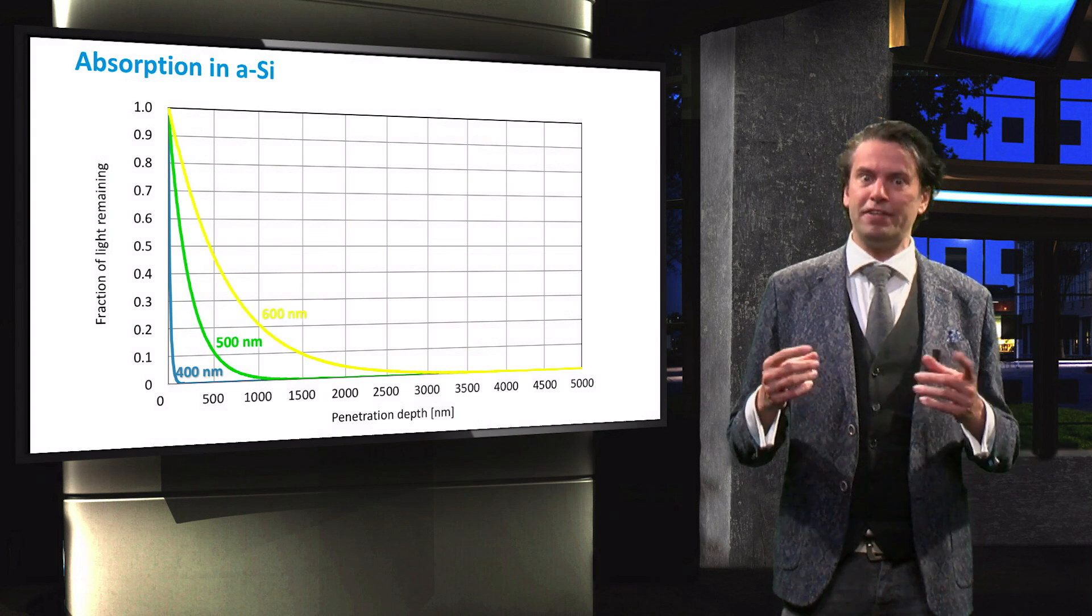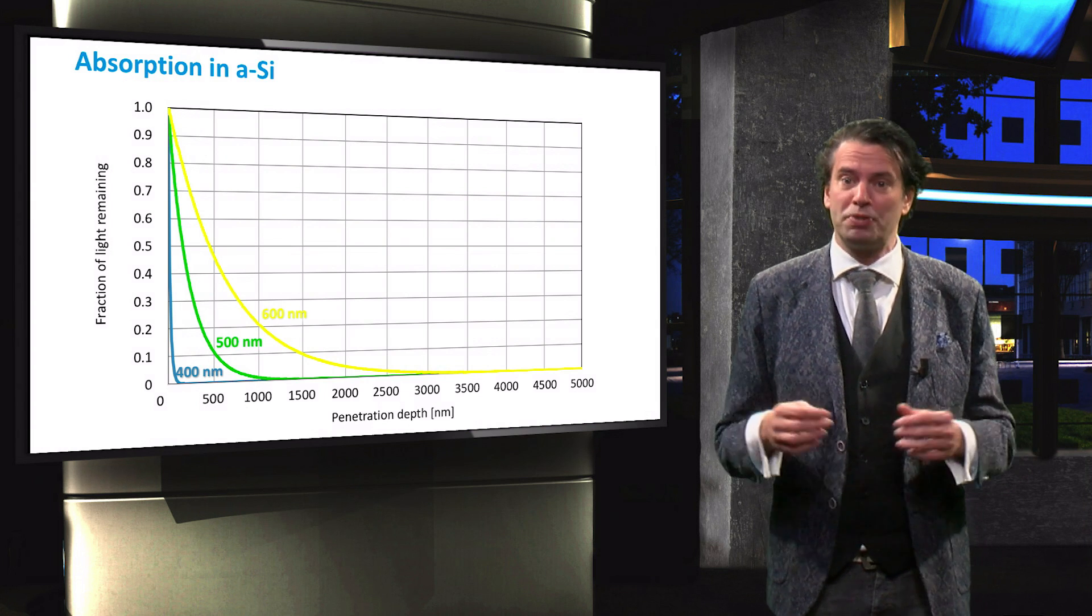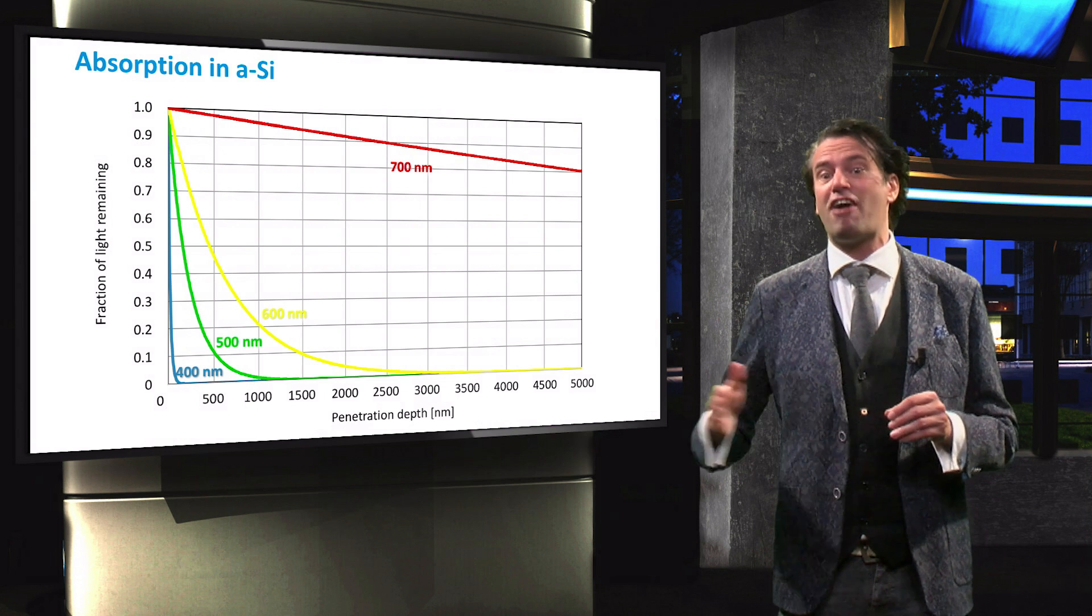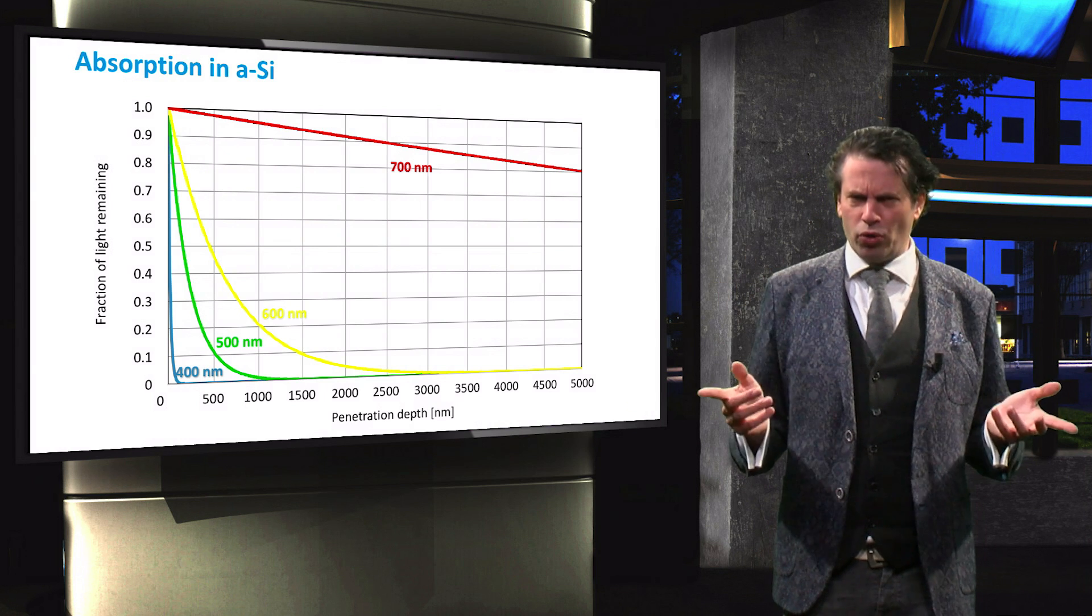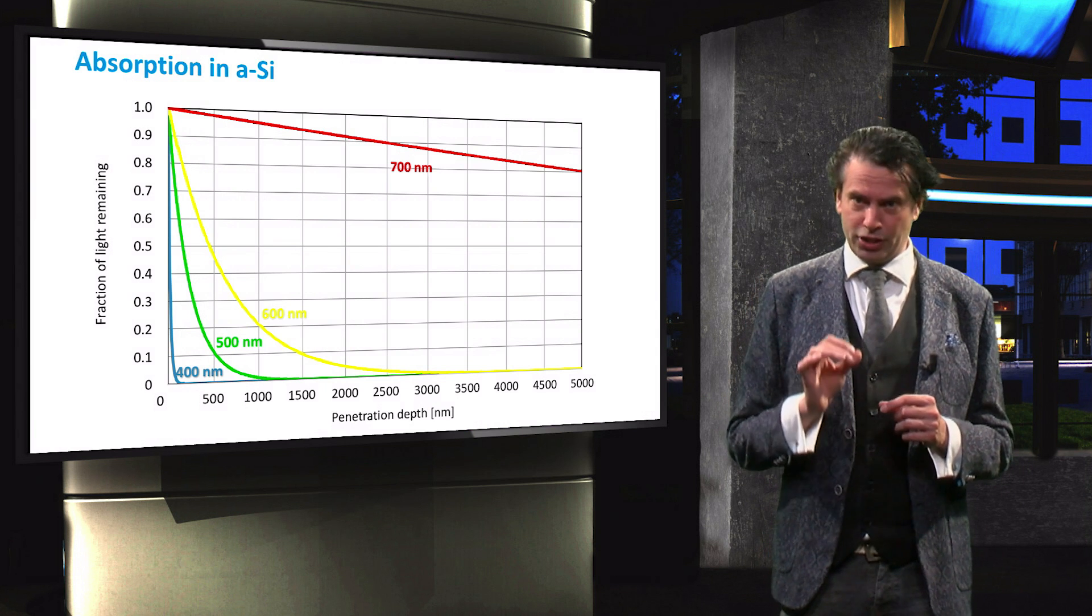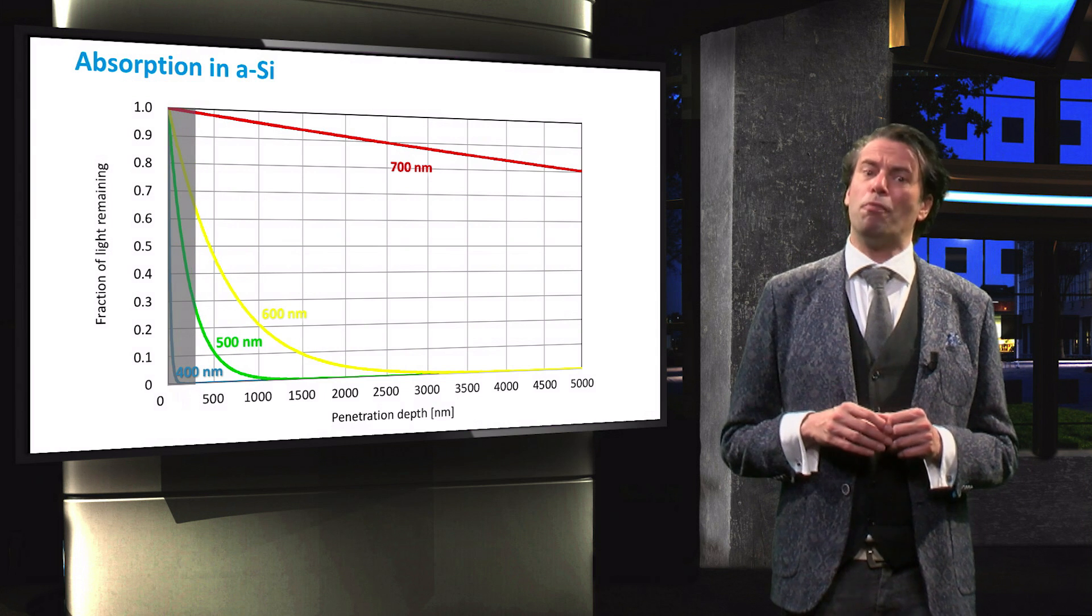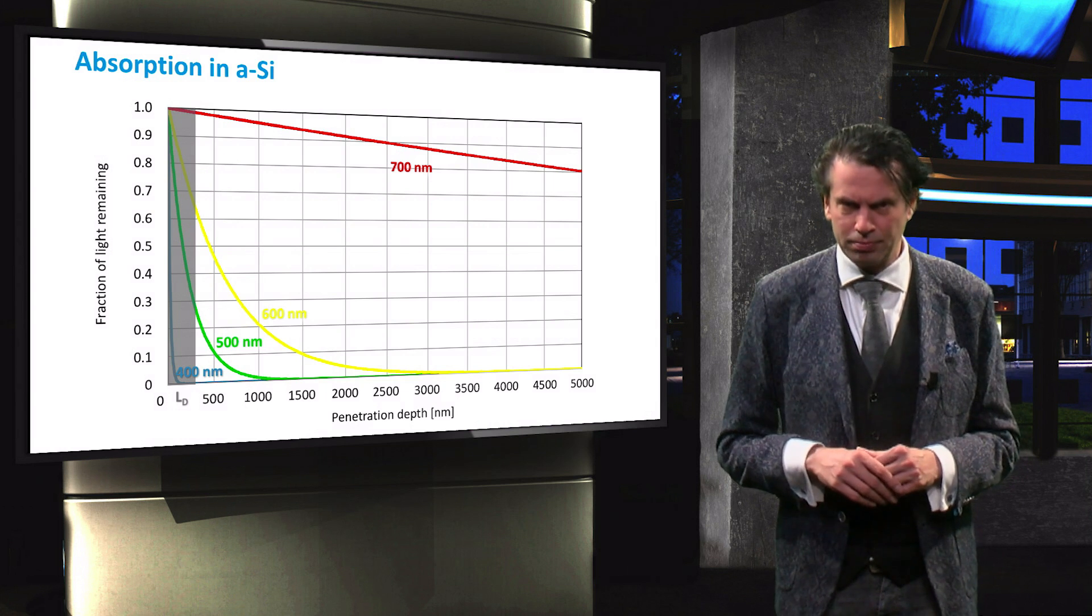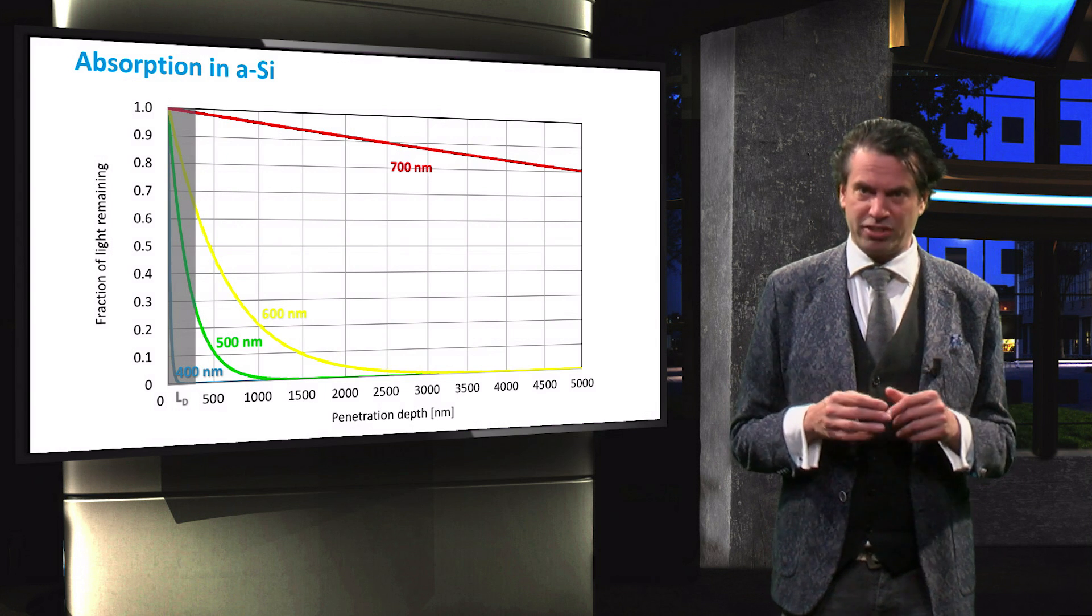For yellow light it takes 1500 nm for 90% of the incident light to be absorbed, and of the incident red light only 20% is absorbed after travelling 5 microns through the absorber layer. As we recall, the charge carrier diffusion length is the typical distance light-excited charge carriers diffuse before they recombine. The diffusion length of amorphous silicon is somewhere between 100 and 300 nm. An amorphous silicon absorber is therefore typically a couple of hundred nm thick.